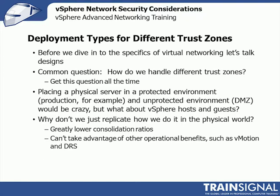Before diving into specifics, let's talk about design. A common question is how to handle different trust zones. With a physical server, we wouldn't put one NIC into the DMZ and one into production because we'd be bypassing firewalls and creating a path for an attacker to get into the DMZ, exploit the host, and then have a path into production. So why not replicate the physical world with dedicated hosts in the DMZ and dedicated hosts in production? The reason is you'd have greatly lower consolidation ratios and lose a lot of benefits - extra hardware for N+1 failover, and fewer efficiencies of scale for DRS to do better balancing.